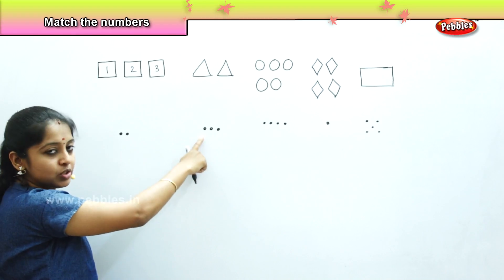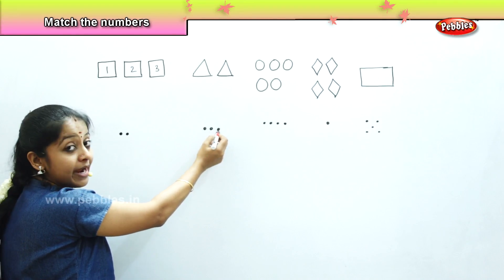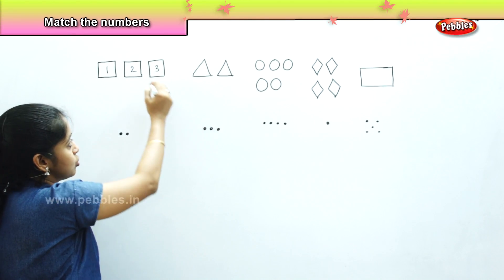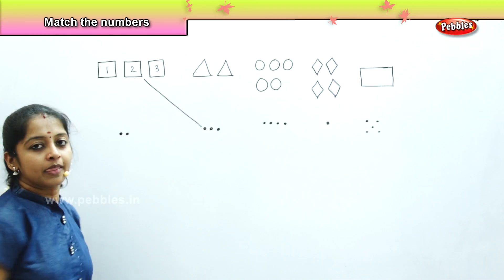Is it 3 dots? No. Is it 3? Can we count? It's 1, 2 and 3. So, we have 3 dots here. So, can we match the square with this dot? Yes.